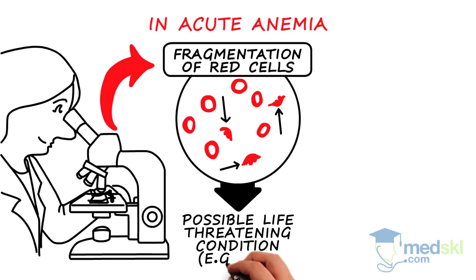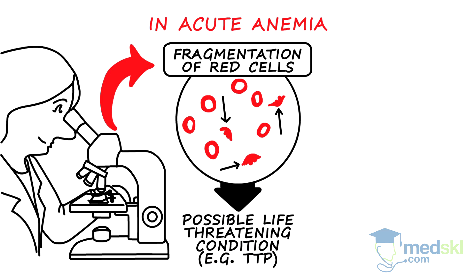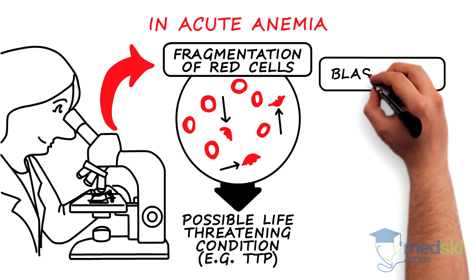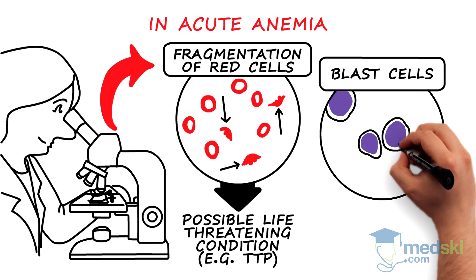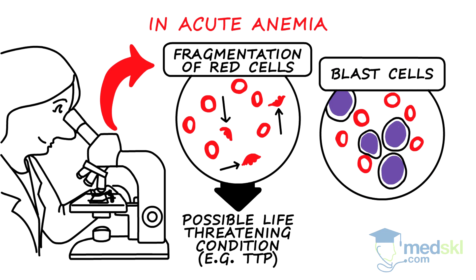such as thrombotic thrombocytopenic purpura, or the presence of blast cells, which are immature white cells seen in acute leukemia.